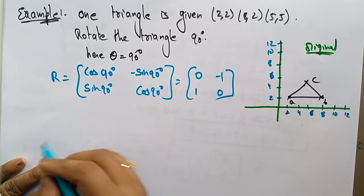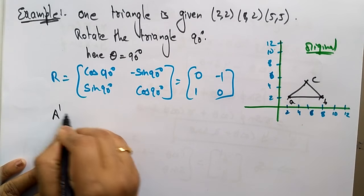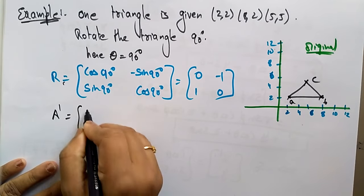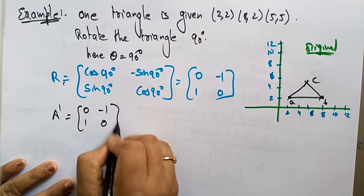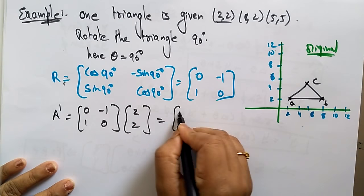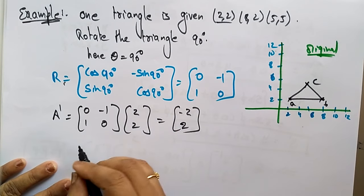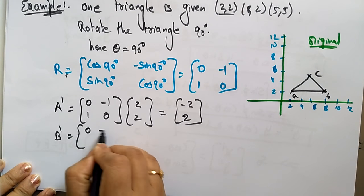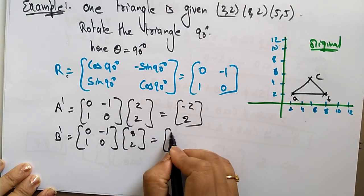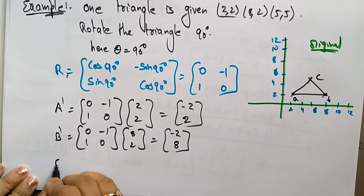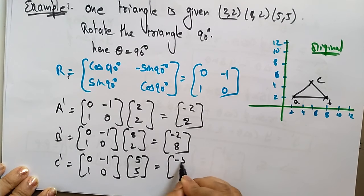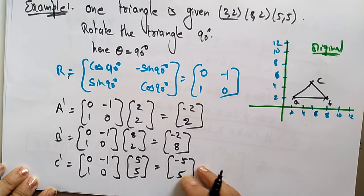Now calculate A'. Using R · A: [0, −1; 1, 0] · [2, 2] = (0·2 + (−1)·2, 1·2 + 0·2) = (−2, 2). For B': [0, −1; 1, 0] · [8, 2] = (−2, 8). For C': [0, −1; 1, 0] · [5, 5] = (−5, 5). So the new coordinates are A'(−2, 2), B'(−2, 8), C'(−5, 5).